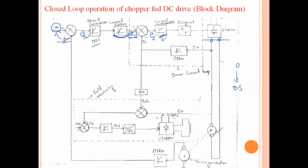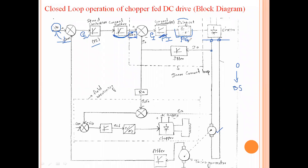This current error is regulated by the current controller — generally a PI controller, which is a traditional controller. This PI controller produces a reference waveform, which is given to the pulse generator. Based on this reference waveform, the pulse generator produces the required duty ratio to control the chopper.